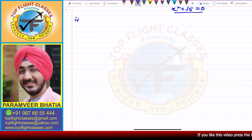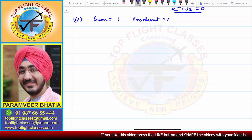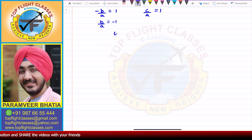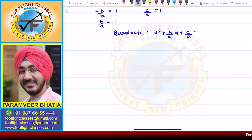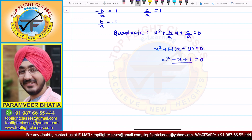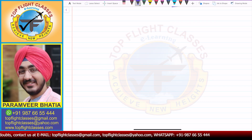For the fourth part, the sum is 1 and the product is 1. Sum = 1 means -b/a = 1, so b/a = -1. Product = 1 means c/a = 1. Writing the quadratic: x² + (b/a)x + c/a = 0 gives x² + (-1)x + 1 = 0, which is x² - x + 1 = 0. This is the required quadratic.